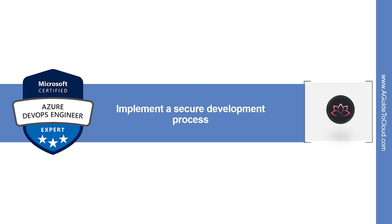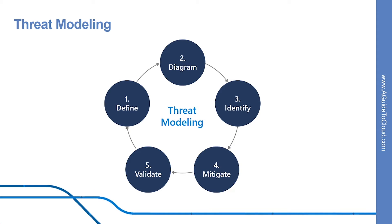Now let's learn about how to implement a secure and compliant development process. First, let's look into threat modeling. Threat modeling is a core element of the Microsoft Security Development Lifecycle. It's an engineering technique you can use to help you identify threats, attacks, vulnerabilities, and countermeasures that could affect your application. You can use threat modeling to shape your application's design, meet your company's security objectives, and reduce risk.